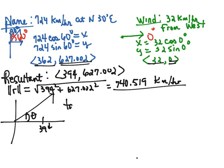So we can write the tangent of theta is equal to 627.002 divided by 394. And that makes theta, if we do inverse tangent on our calculator, equal to 57.855 degrees.